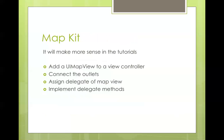That's core location. The map kit also works based on the location manager — you still need authorization and the location manager to get your position on the map. To add a map: go to the storyboard, add a map view, establish an outlet, and assign the map delegate. The map delegate is different from the core location delegate and handles things like zooming in/out, changing regions, and annotations.